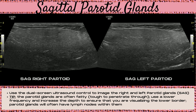Next, move on to the sagittal parotid glands, found in front of the ear and just slightly inferior. Use the dual screen control to image the right parotid on one side and the left on the other. The parotid gland is best imaged in the sagittal plane. Pro tip: parotid glands are often quite fatty — almost like a fatty liver on ultrasound — making it tough for sound waves to penetrate. In these cases, use a lower frequency, increase the depth to visualize the lower borders, and increase the far-field TGC. It's also very common to see lymph nodes within the parotid glands, appearing as oval to circular structures with a hypoechoic outer rim and a hyperechoic central fatty hilum.